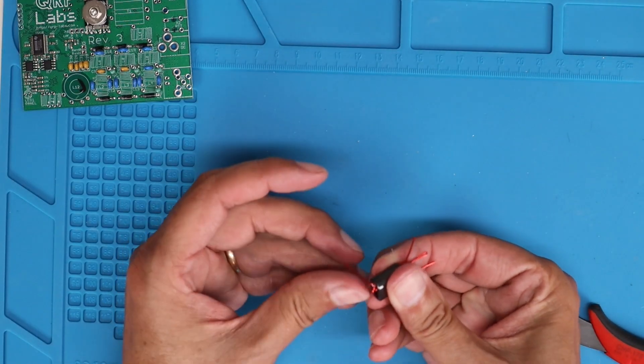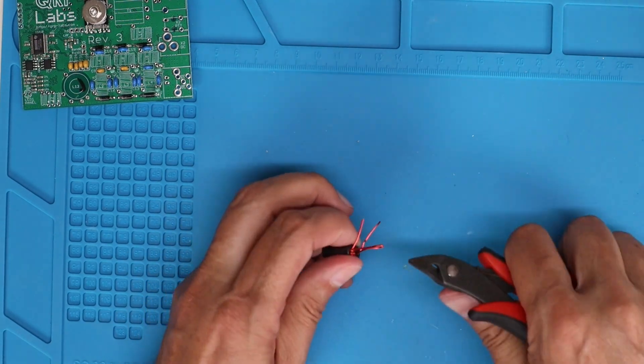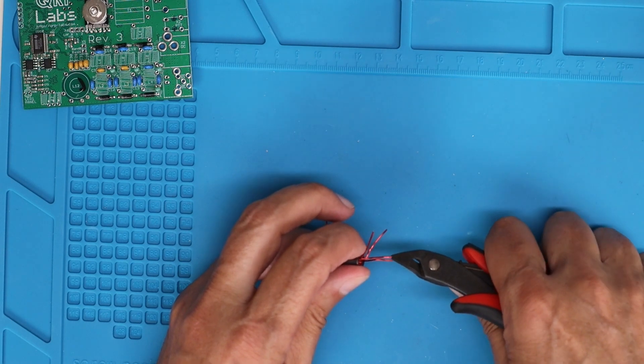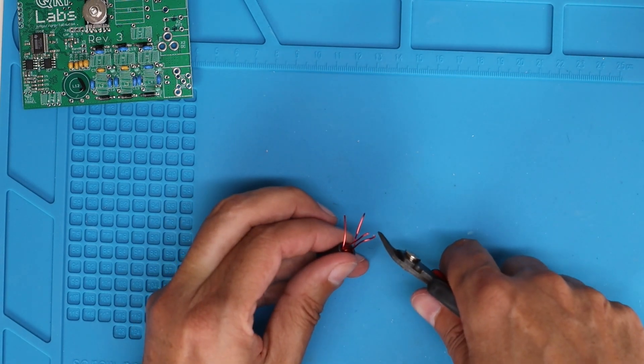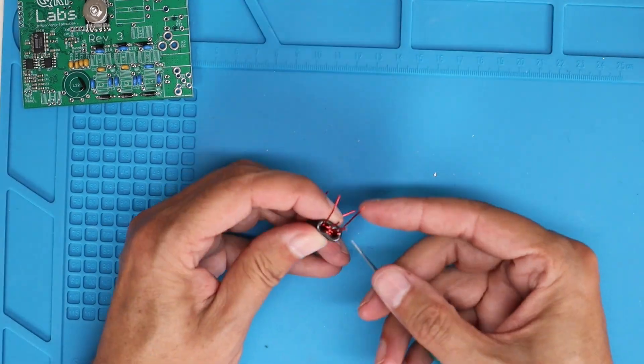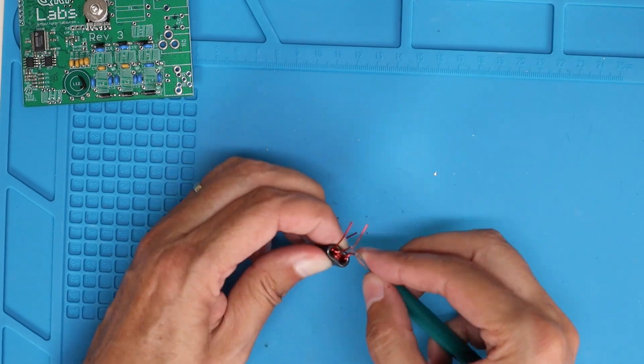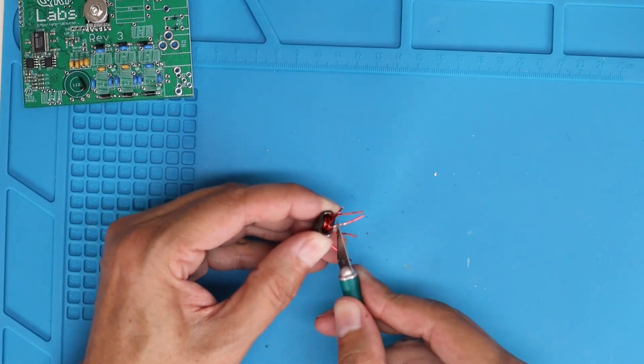So, next we'll go ahead and bend these legs down. And then the instructions tell you to go ahead and cut the center tap loop so that it will fit through the hole in the PCB. There's one hole that both these wires have to go through. So, I cut it and then cut the little bent edges off.